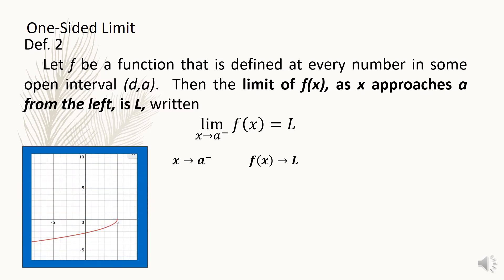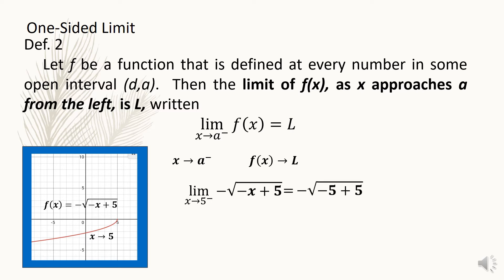Now, observe the graph of f of x = −√(−x + 5). The graph is only defined as x approaches 5 from the left, and it is not defined when x approaches from the right. To define the limit: the limit of −√(−x + 5) as x approaches 5 from the left, substitute x = 5, giving −√(−5 + 5), so the limit is 0.